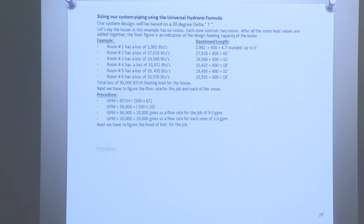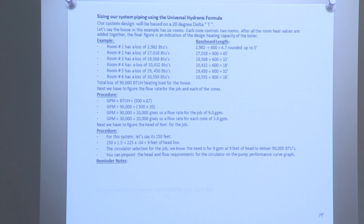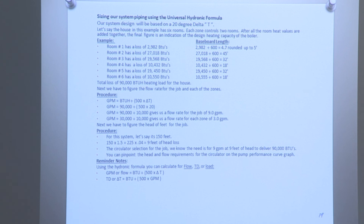Next, we figure the head in feet for the job. For this system, the longest loop is 150 feet. 150 times 1.5 equals 225 feet times 0.4 equals 9 feet of head. For circulator selection: we need 9 gallons per minute at 9 feet of head to deliver 90,000 BTUs. You can pinpoint the head and flow requirements on the pump performance curve graph. Reminder: using the hydraulic formula, you can calculate flow, temperature difference, or load. GPM equals BTU divided by 500 times delta T; delta T equals BTU divided by 500 times GPM; and BTU equals 500 times delta T times GPM.